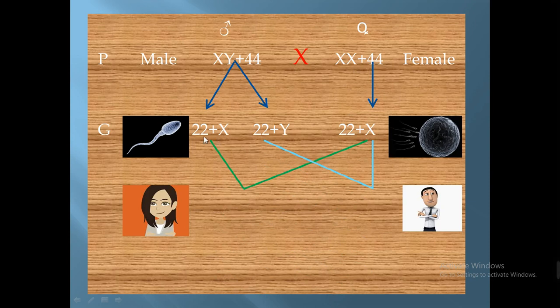When fertilization occurs between the sperm containing 22 plus X and the ovum containing 22 plus X, the result will be 44 plus XX — a female. When the sperm containing 22 plus Y fertilizes the ovum containing 22 plus X, the result will be 44 plus XY — a male. This is the normal fertilization resulting in a normal male or normal female.